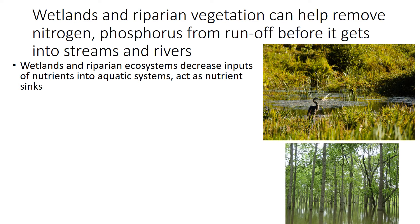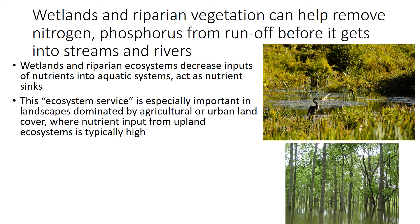Just as we talked about different ecosystems acting as carbon sinks, wetlands and riparian ecosystems can actually act as nutrient sinks, where they take up more nutrients than they let leave. This is considered an ecosystem service, and it's particularly important in landscapes dominated by agriculture or urban land cover, where nitrogen input from upland ecosystems is typically quite high.